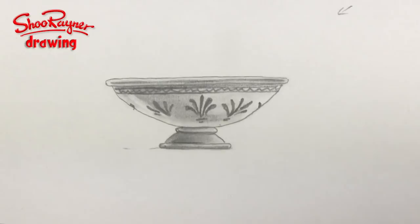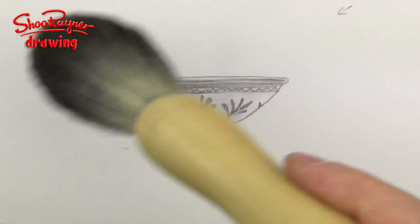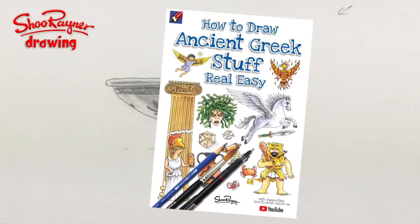And don't forget also that you can add those little highlights with your eraser as well. Just going to clean the dust off there and there you go, there's a very simple little illustration which is going on the inside cover of my book. So there you go, how to use cotton buds to blend your drawings with.